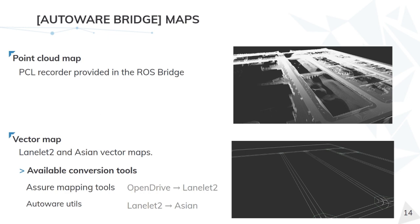The last topic is Autoware maps. Autoware accepts two different types of maps: point cloud maps and vector maps. Point cloud maps are mainly used for localization purposes and are already provided for all Carla towns, with a link to the repository available in the notes. A PCL recorder is also provided inside the ROS bridge to allow the creation of custom point cloud maps.